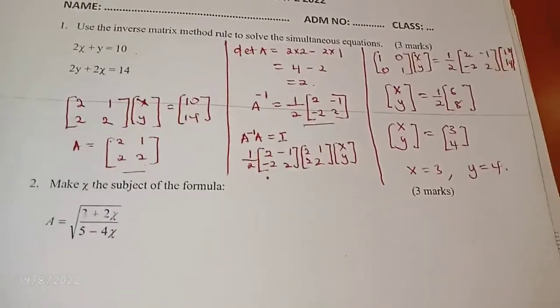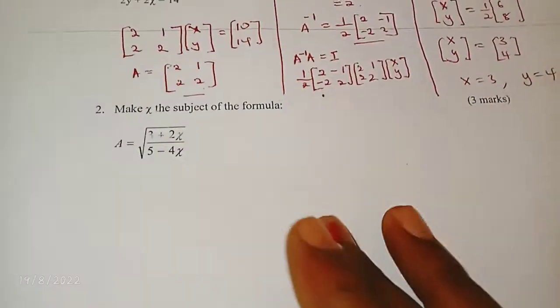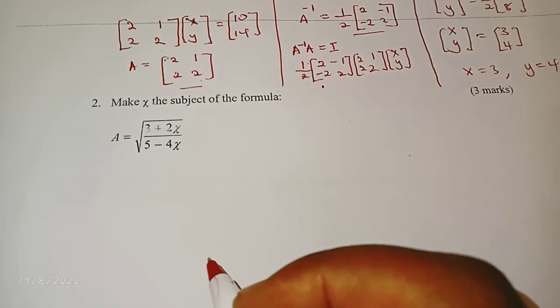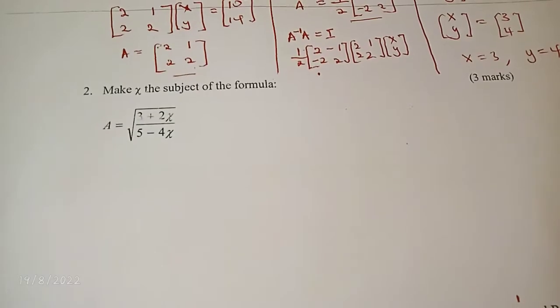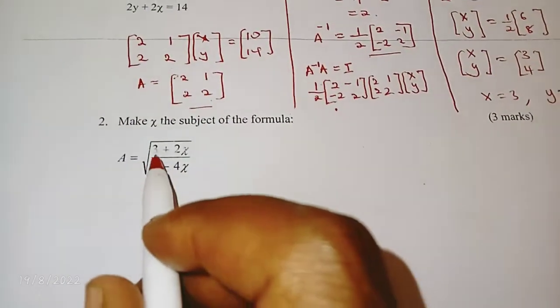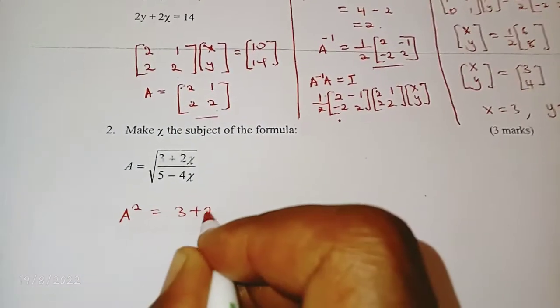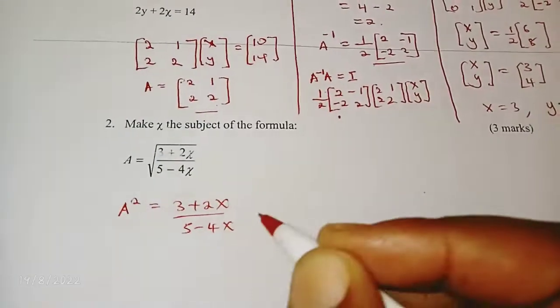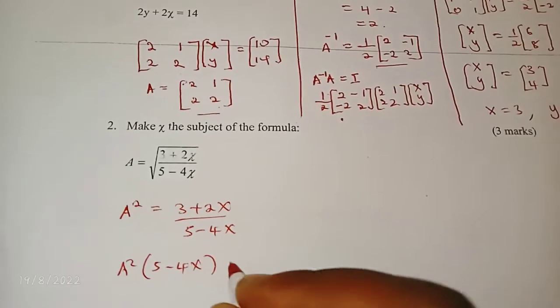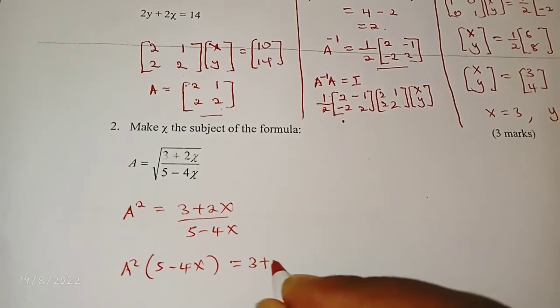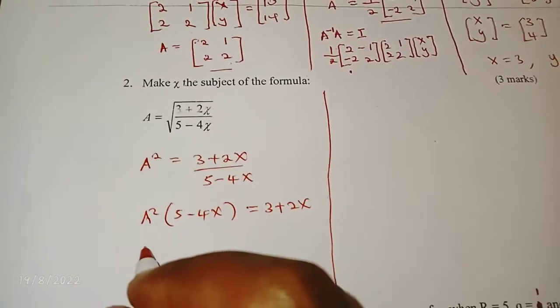Coming down here, we have to make x the subject of the formula. We are told that A equals the square root of (3 + 2x) over (5 - 4x). Whenever you have a square root here, you square both sides, so we have A squared equals (3 + 2x) over (5 - 4x). You cross multiply: you have A squared into (5 - 4x) equals (3 + 2x).